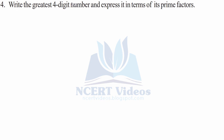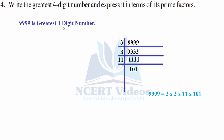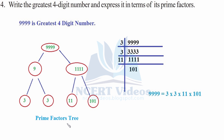Question 4: Write the greatest four-digit number and express it in terms of prime factors. The greatest four-digit number is 9999. When we prime factorize it: 9999 = 3 × 3333 = 9 × 1111 = 9 × 11 × 101. The factor tree shows 9999 as 9 × 1111, where 9 = 3 × 3 and 1111 = 11 × 101.